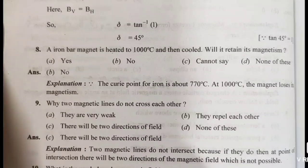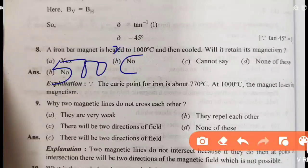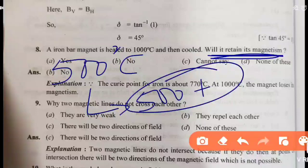Next: if iron bar is heated to 1000 degrees centigrade, then cooled, will it retain its magnetism? This is a most important question that has appeared in sample papers and revision tests. Iron loses its ferromagnetic properties above the Curie point, which is around 780 degrees. Since 1000 degrees exceeds the Curie temperature, it cannot retain its magnetic properties. So the answer is no.